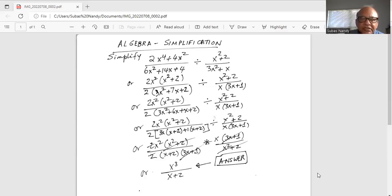So we have 3x square plus 6x plus x plus 2. The whole thing is divided by x square plus 2 divided by x times 3x plus 1.